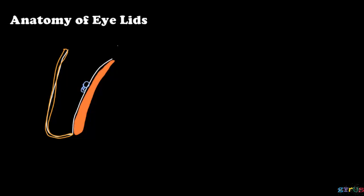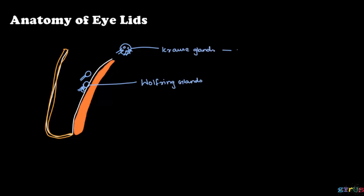Other accessory glands are the glands of Wolfring, which are present near the tarsal, and the Krause gland, which is present superiorly and posteriorly.